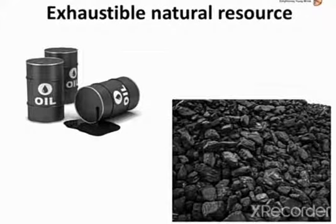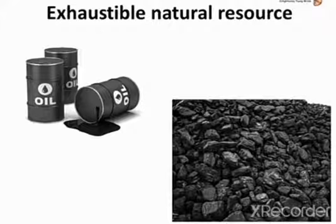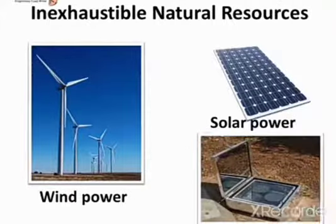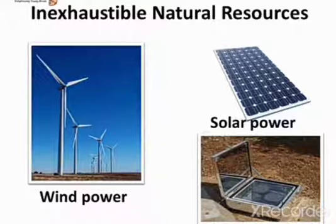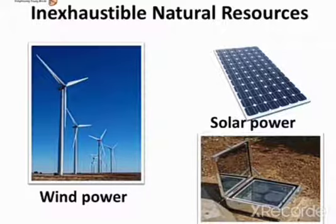Coal, petroleum, natural gas, etc. are not available in unlimited quantities. With heavy use of these resources, we will run out of them in the not so distant future. So these are exhaustible natural resources, and hence we have turned to resources which are available in unlimited quantities for fuel and electricity production. Sunlight and air are such inexhaustible natural resources. Solar energy is nowadays used for generating electricity for homes and industry, and also for cooking.